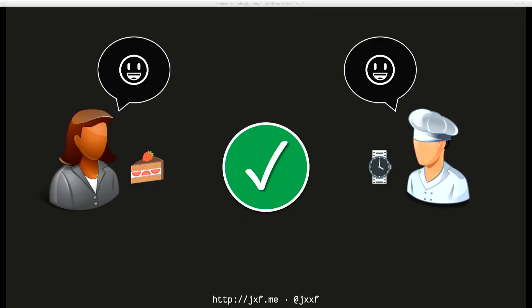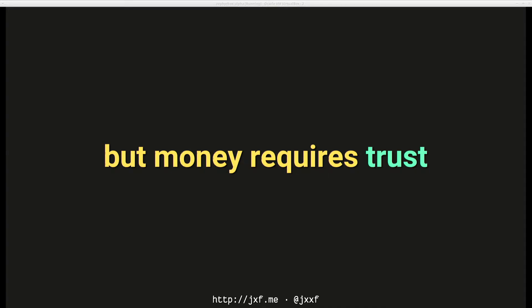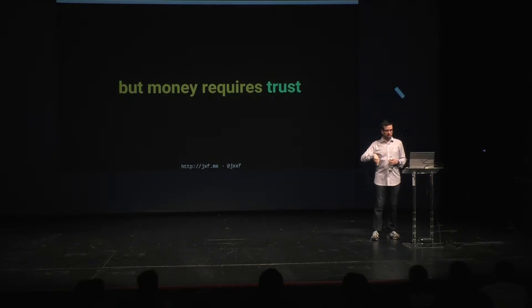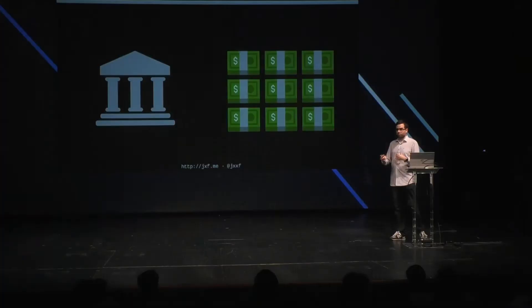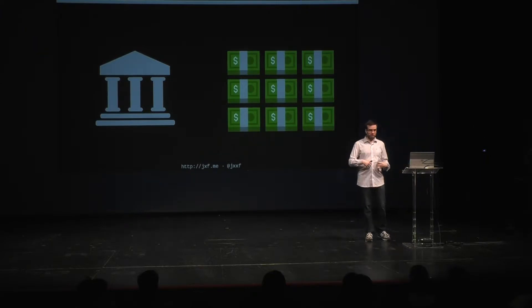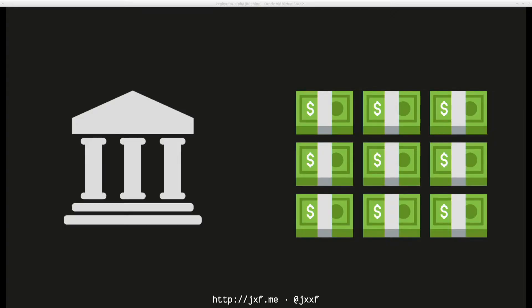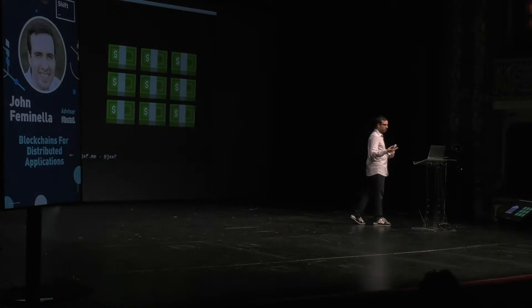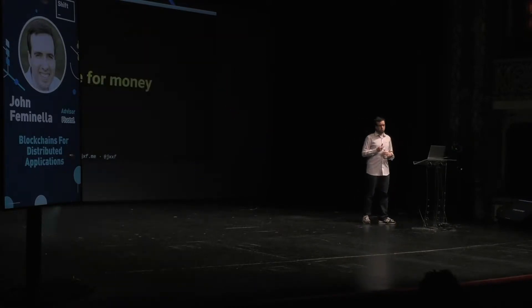Bob is trusting the government or institution printing the money to be able to exchange it for goods and services later. That's not always true — governments institute capital controls, set rules about what you can or can't do with money. If you're an arms dealer, your money might get frozen. So you're effectively agreeing to certain kinds of rules when you use fiat currency.